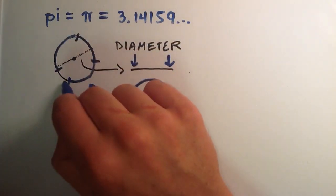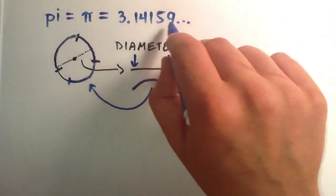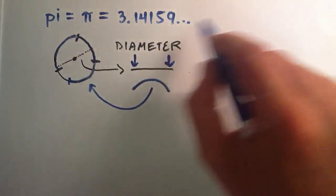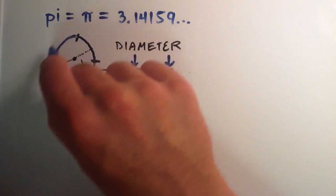Basically, this little section right here is the 0.14159 dot dot dot, and this would be 1, 2, and the 3.